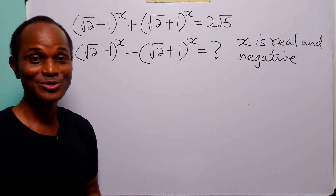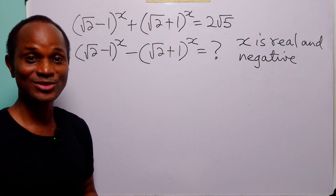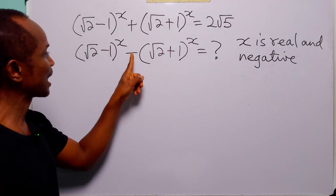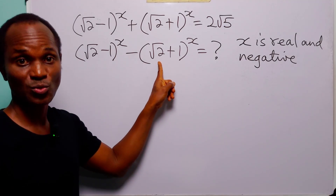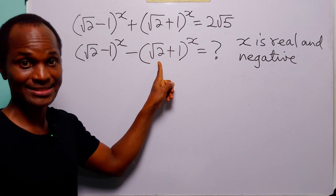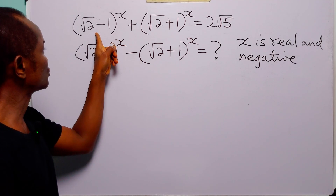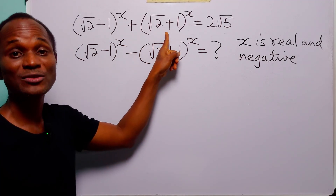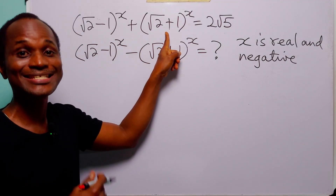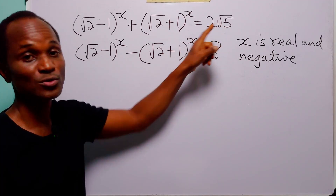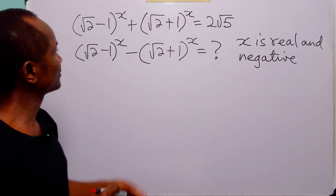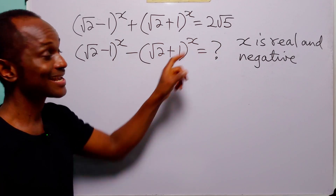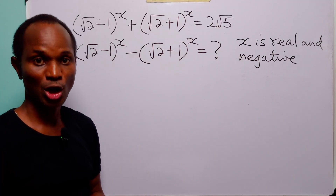Hello and welcome. In this math tutorial, our task is to find the value of (√2 - 1)^x minus (√2 + 1)^x, given that (√2 - 1)^x plus (√2 + 1)^x is equal to 2√5. We are told that the exponent x is a negative real number.